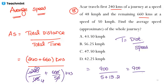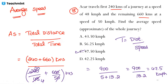You travel 240 km at 48 km/h and then 660 km at 50 km/h. Adding the times gives approximately 18.2 hours total. Average speed = 900 / 18.2, which is slightly less than 50. Since 900/18 = 50, and the denominator is more than 18, the answer must be less than 50 — approximately 47.5 km/h.